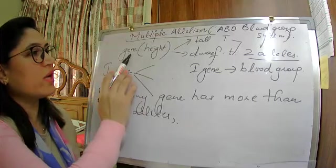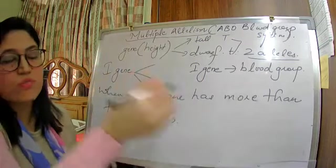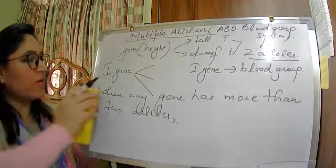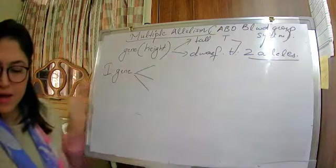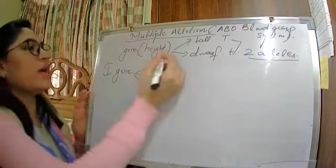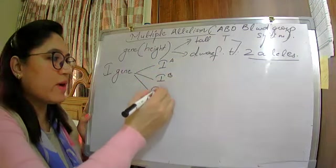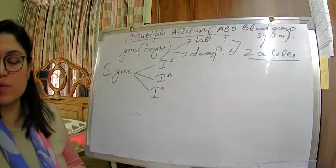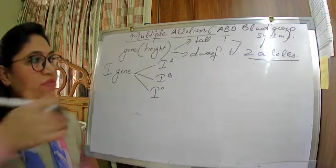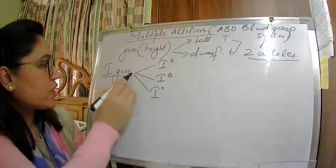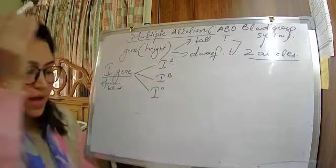Till now we have studied that one gene has two alleles, but now there is one gene — the blood group gene — which has more than two alleles. Our blood group is represented by the i-gene. This i-gene can have three forms: i-A, i-B, or i-O.